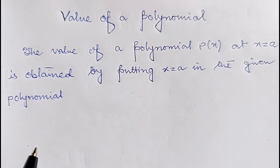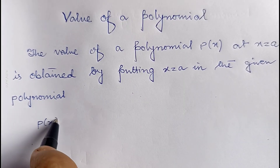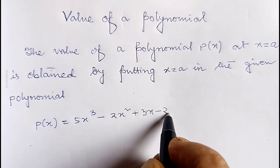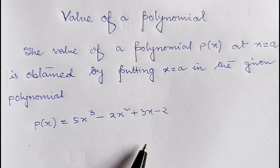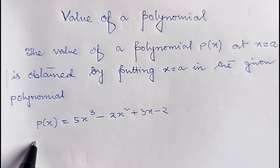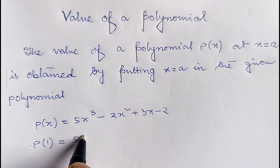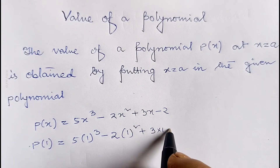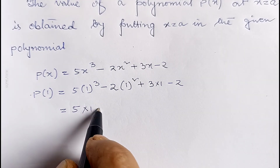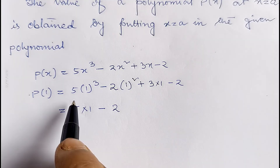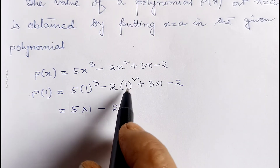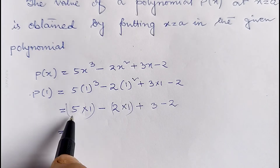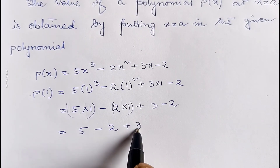Suppose p(x) equals 5x³ minus 2x² plus 3x minus 2. This is a polynomial and we want to find the value of this polynomial when x equals 1. Then we can write p(1) equals 5 into 1³ minus 2 into 1² plus 3 into 1 minus 2.